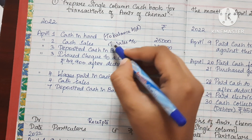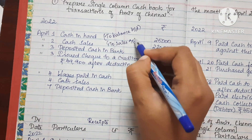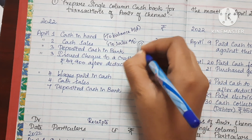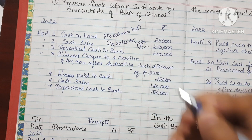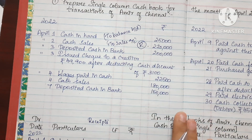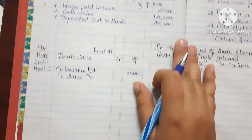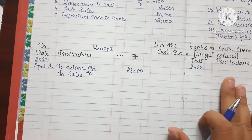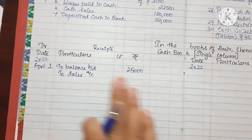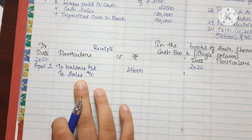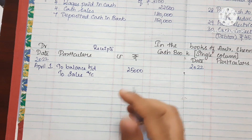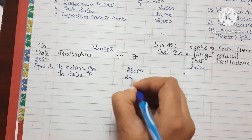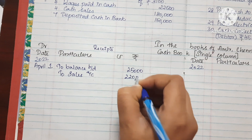The first transaction is cash sales return. We debit the cash account and credit the sales return account. The amount is Rs. 2,000.